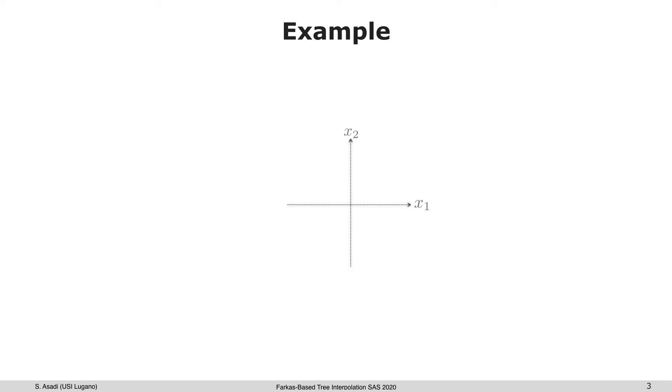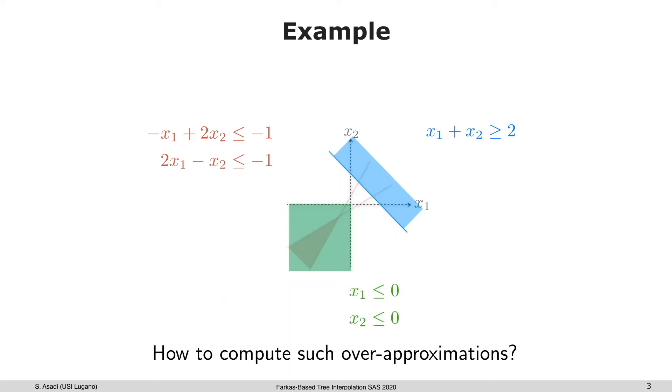Let's look at a simple example illustrating over-approximation in LRA. Consider two sets of linear inequalities. One possible over-approximation of this pink area could be this green half-plane, and obviously there could be several such over-approximations.